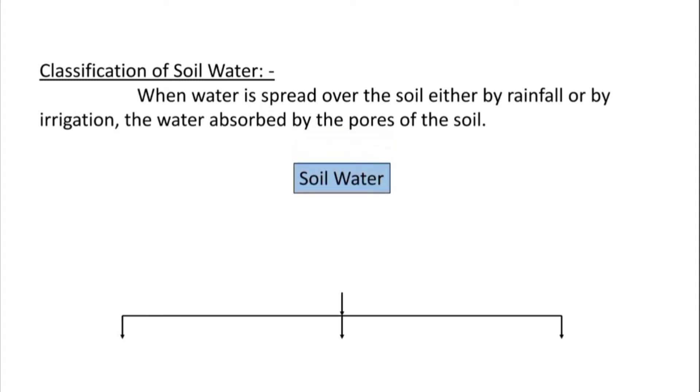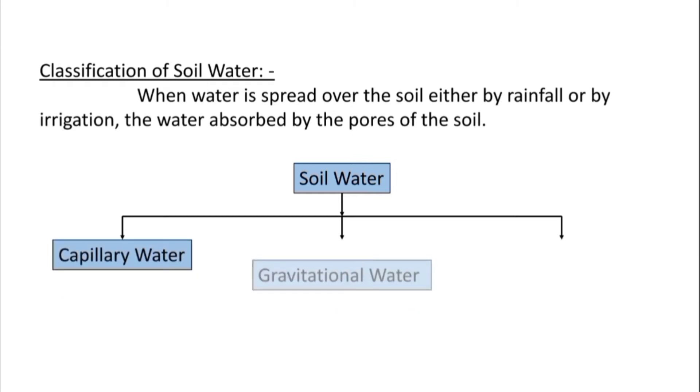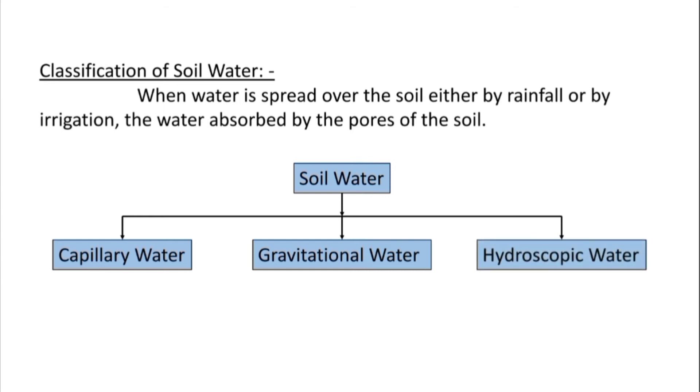Soil water has three types: Number one, capillary water. Number two, gravitational water. Number three, hydroscopic water.